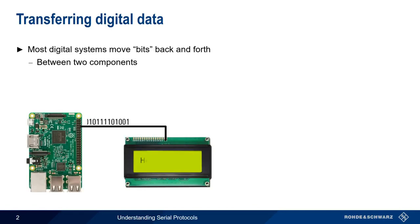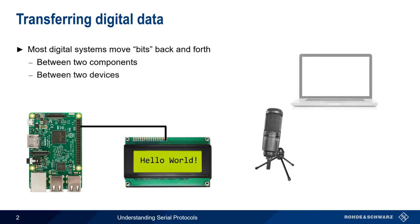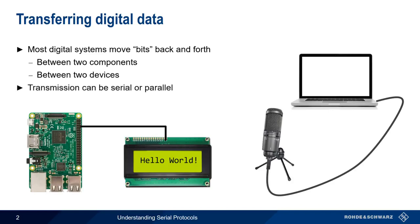As everyone knows, digital systems are based on the concept of bits. But digital systems don't just use bits, they usually need to move or transfer them back and forth. This could be between two components, say a microcontroller and an LCD display, or between two devices, such as a USB microphone and a computer. The different methods of transferring bits can be separated into two main categories: parallel and serial.